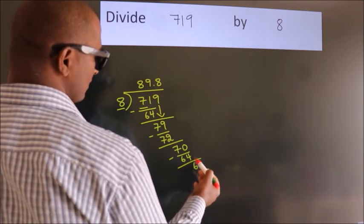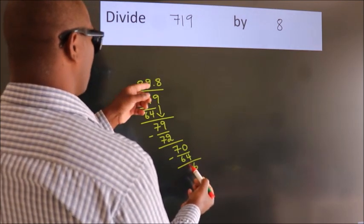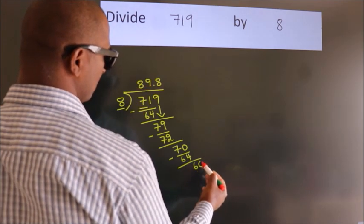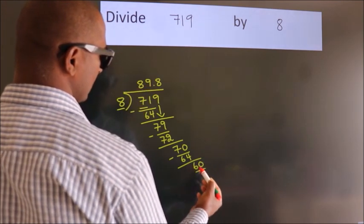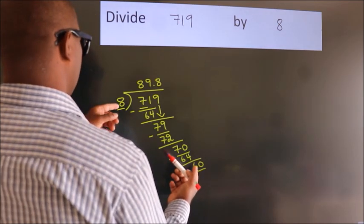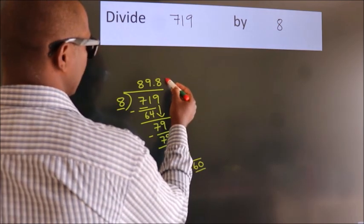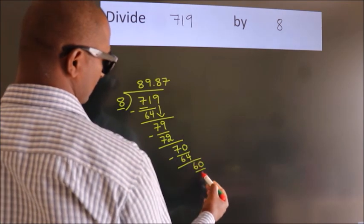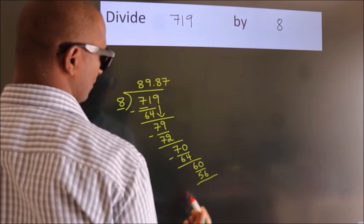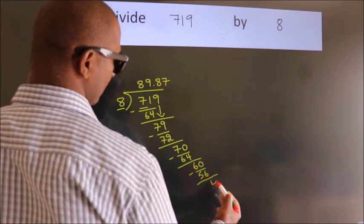After this, we already have the decimal, so directly take 0. So 60. A number close to 60 in the 8 table is 8 times 7, 56. Now we subtract. We get 4.